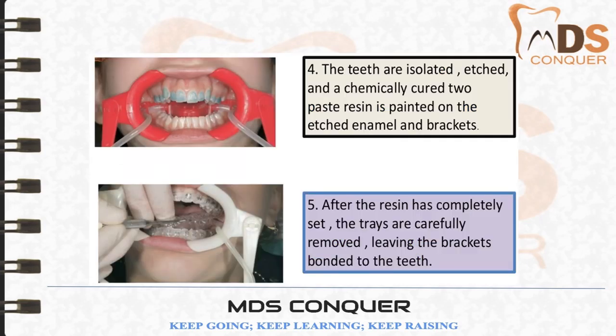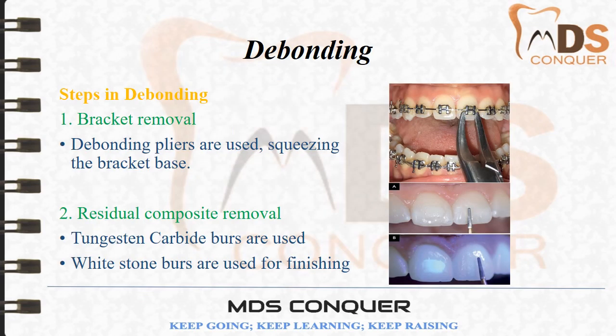Intraorally, the teeth are isolated, etched, and chemically prepared. The tray is then placed on the teeth, cured, and slowly removed, leaving the brackets bonded on the teeth.